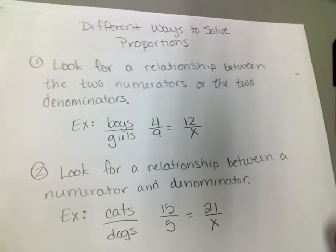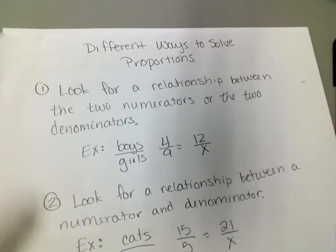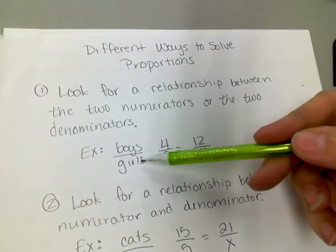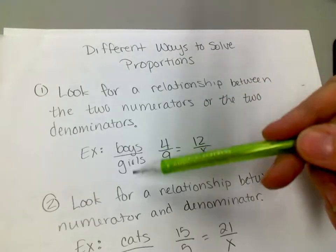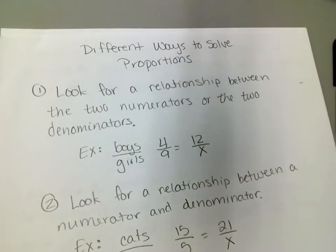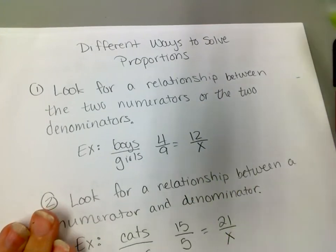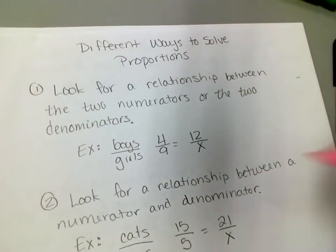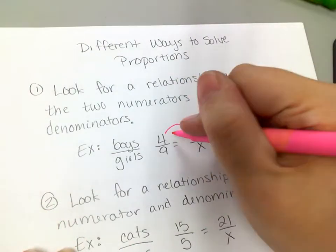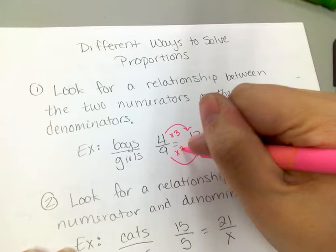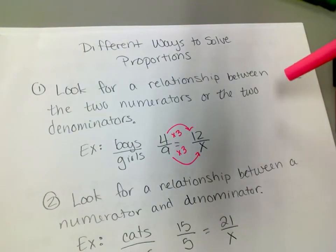Okay, we're going to talk about proportions and different ways to solve proportions. There's a couple different ways that we can look at right now. One of them is to look for a relationship between the two once you set them up as like fractions—they're not really fractions, they're ratios—but to look between the two numerators and the two denominators. Like, do I see something, a pattern from here to here? And I can easily see that right here from 4 to 12 I'm multiplying by 3, so that means right here I'm going to multiply by 3.